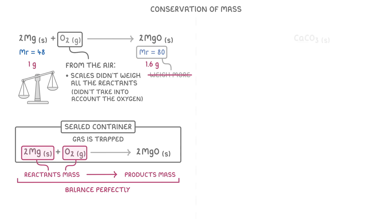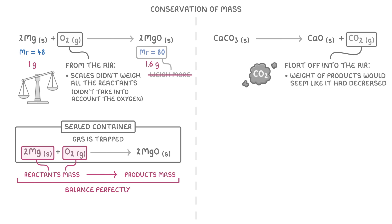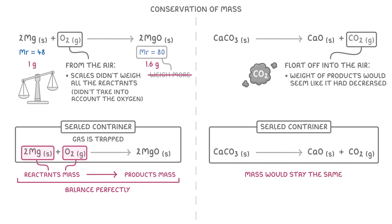On the other hand, if we decomposed calcium carbonate to calcium oxide and carbon dioxide, then the gaseous CO2 would float off into the air, and the weight of our products would seem like it had decreased. Like before though, if we did it in a sealed container, then the mass would stay the same because all the CO2 would be trapped in the container.